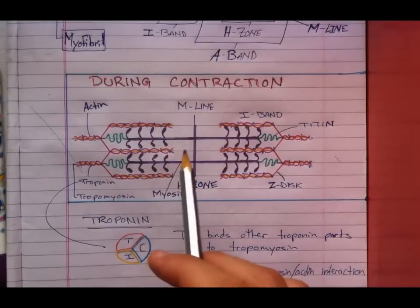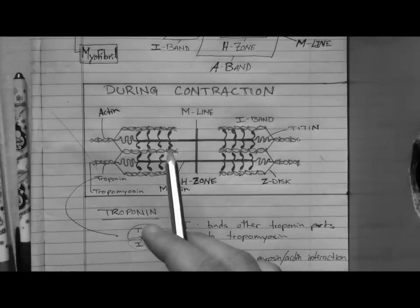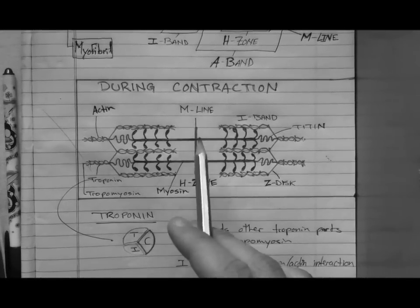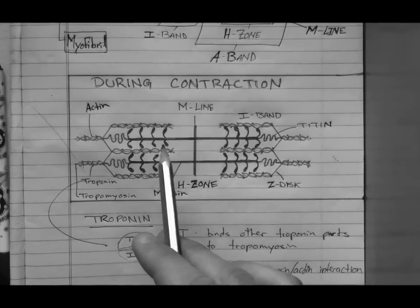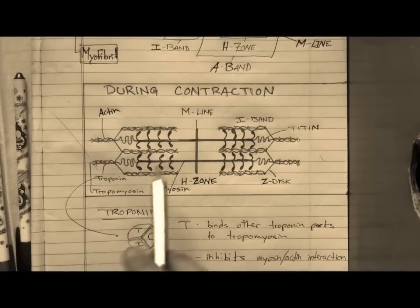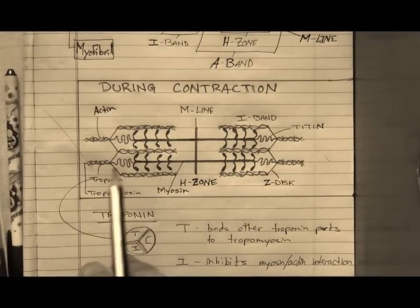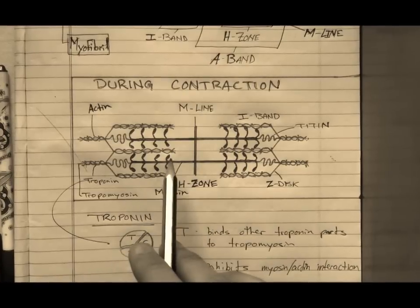These globular heads have two main important functions. The first is that they have an actin binding site where myosin comes in contact with actin. The second is they have an ATP site which is catalytic, meaning it hydrolyzes or breaks down ATP.